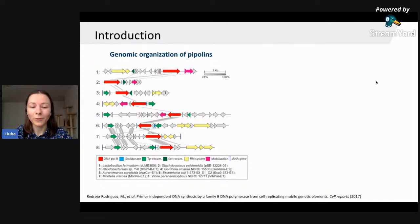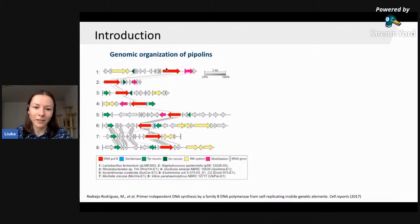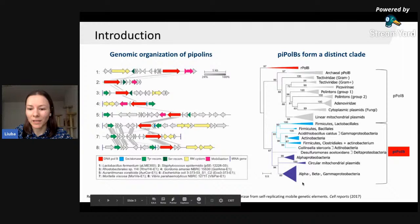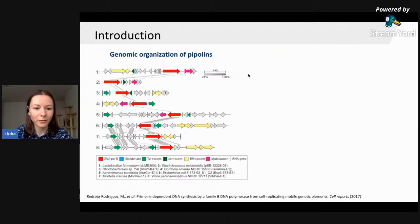Pipolins are a group of novel mobile genetic elements that were found integrated into bacterial genomes, and sometimes they can also be found as circular plasmids. The hallmark of Pipolins is the presence of a special type of DNA polymerase called Primer Independent Pol B, or Pi-Pol B. Phylogenetic analysis showed that Pi-Pol B's form a distinct clade within family B DNA polymerases. Apart from Pi-Pol B, Pipolins also often encode recombinases of tyrosine or serine superfamily, restriction modification systems, and other mobilization proteins.